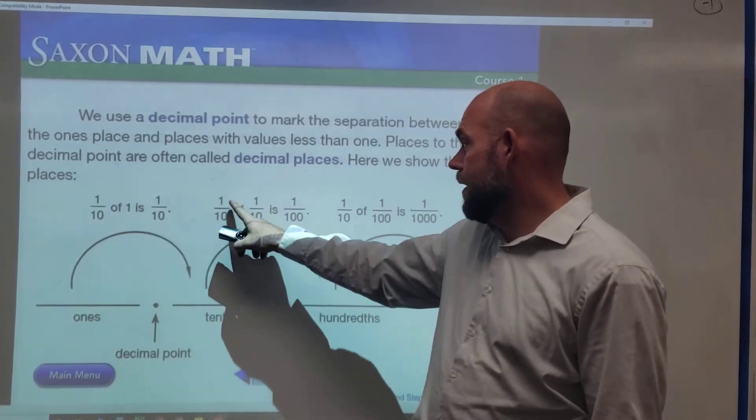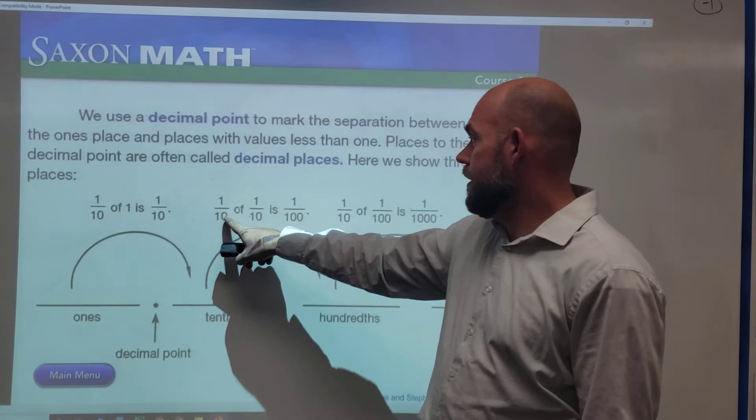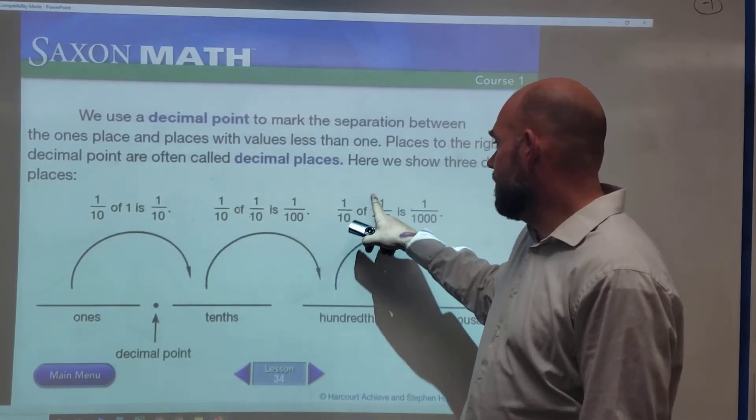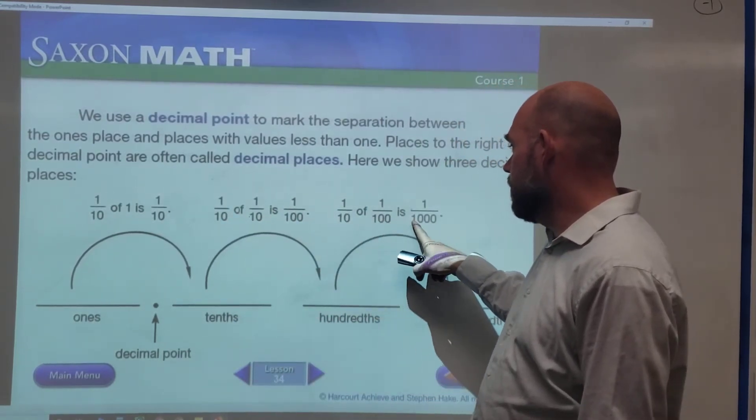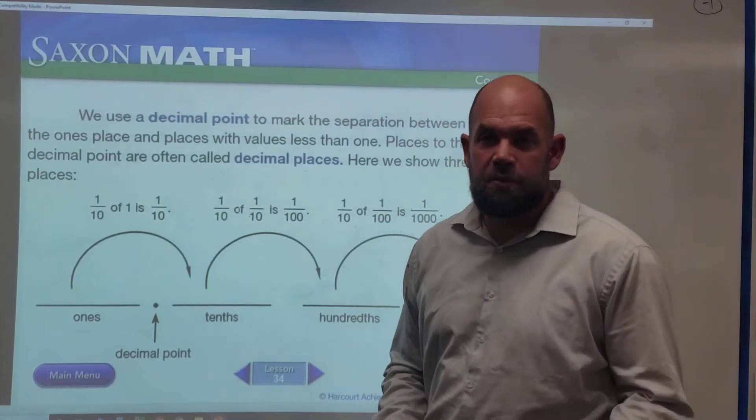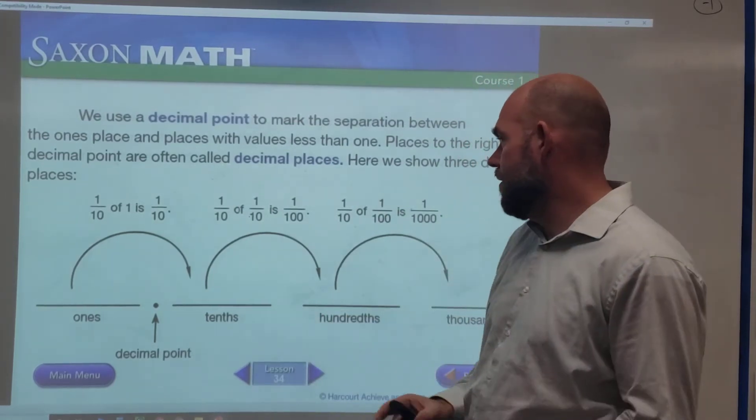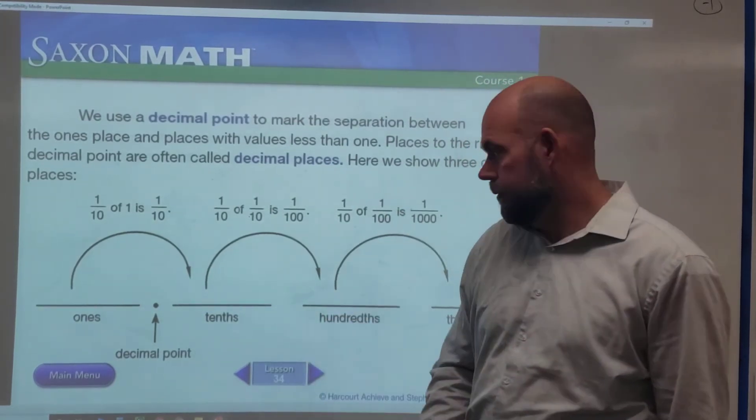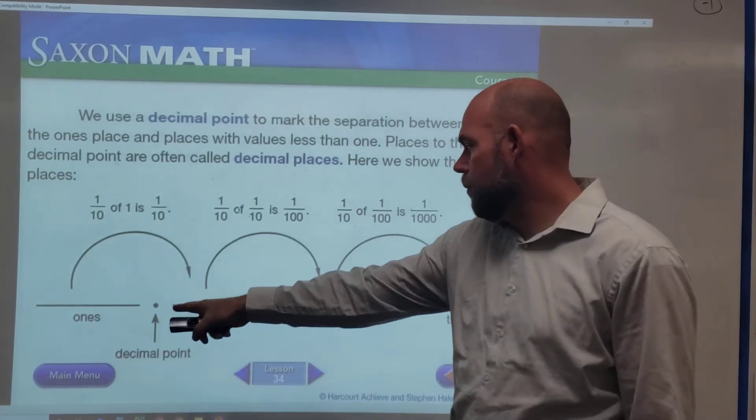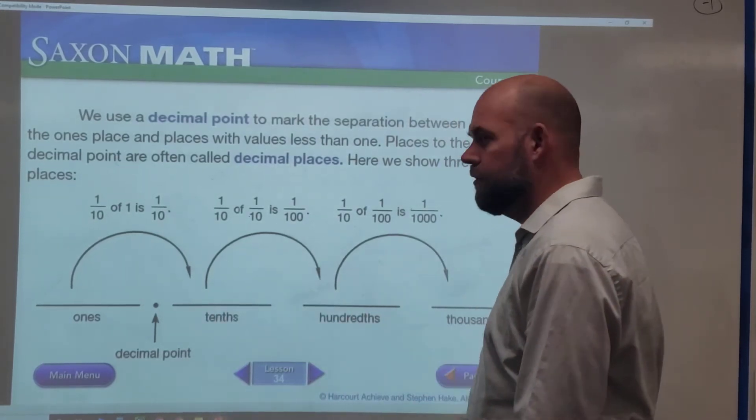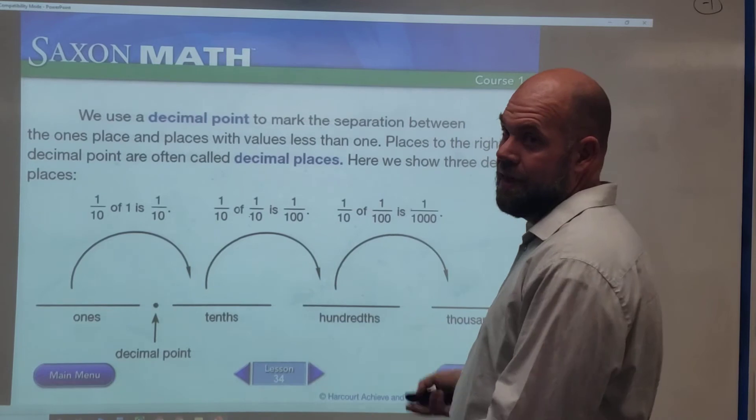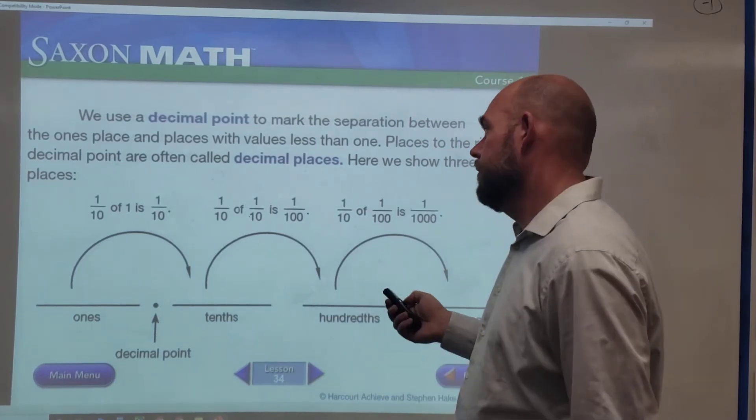So one-tenth times one-tenth: one times one is one, ten times ten is a hundred. One-tenth of a hundredth: ten times a hundred equals a thousand. That's how we figure it out going over—we just add another zero each time to the fraction. So we have the ones, tenths, hundredths, thousandths, and it keeps going: ten thousandths, hundred thousandths, etc.